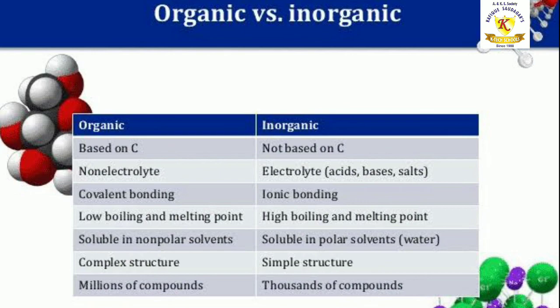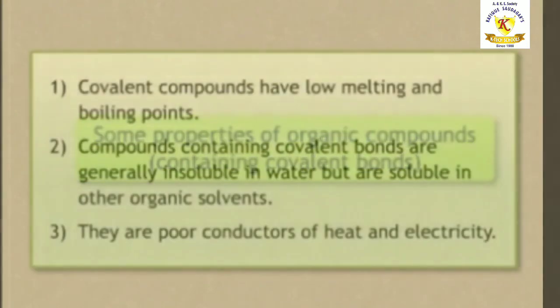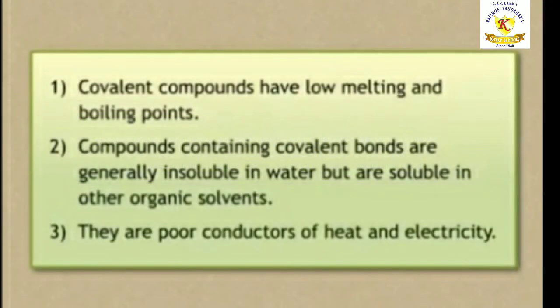Next we will study some properties of organic compounds containing covalent bonds. First, covalent compounds have low melting and boiling points. Compounds containing covalent bonds are generally insoluble in water but are soluble in other organic solvents. They are poor conductors of heat and electricity. Understood children?